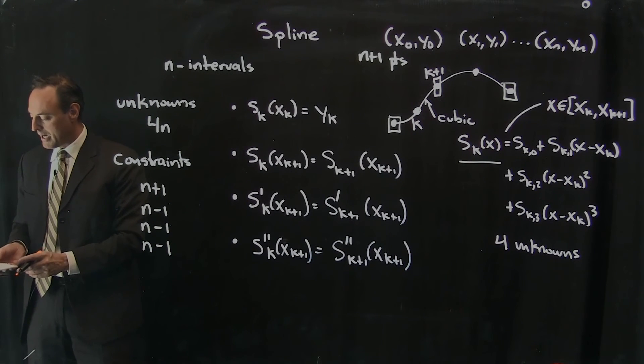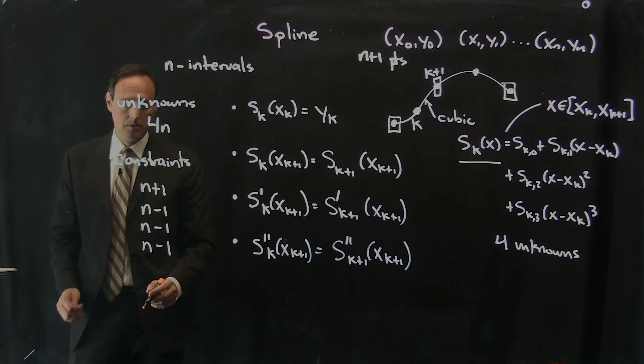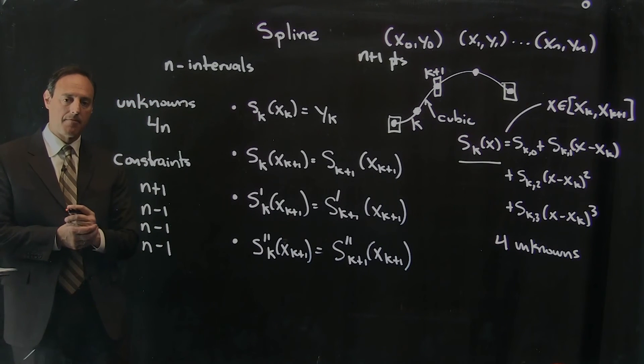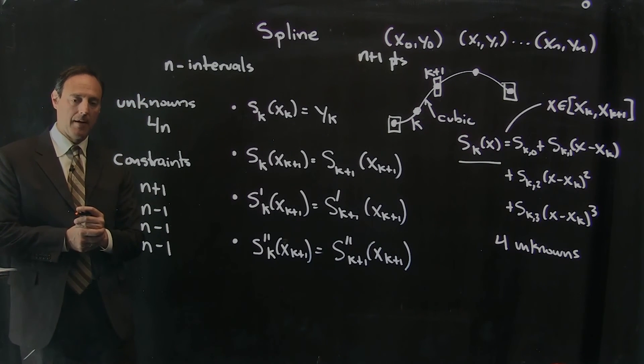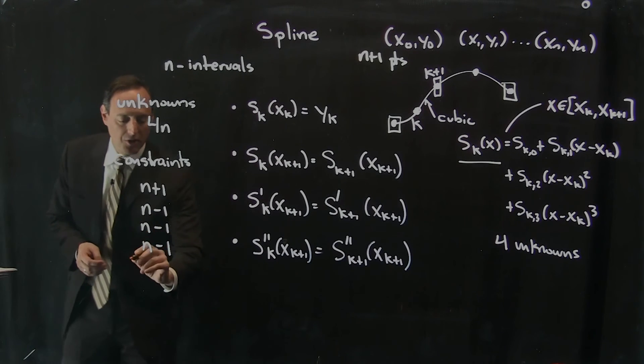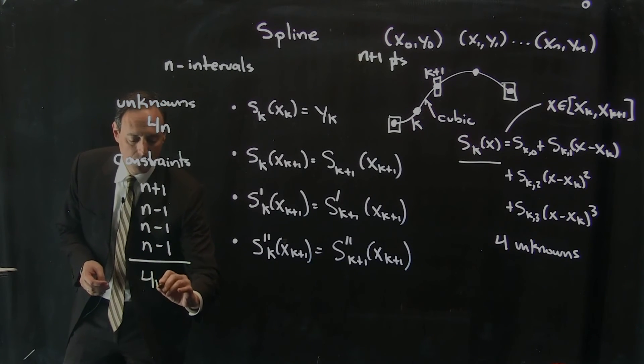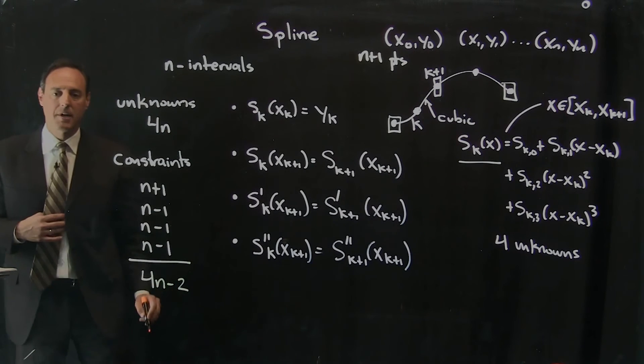Okay? So those are my constraints that I have and that I have to worry about. This gives me a total of 4n minus 2 constraints.